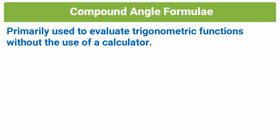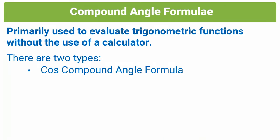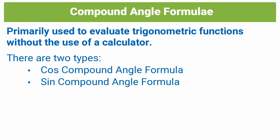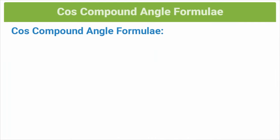Just like when we did double angle formulae, we had two types there. We also have two types of compound angle formulae: the cos compound angle formula and the sin compound angle formula. Today we'll start by looking at the cos compound angle formula. A compound angle is basically an angle that's made up of two or more parts. For example, cos(θ + β) is a compound angle because it's made up of two parts: theta and beta.